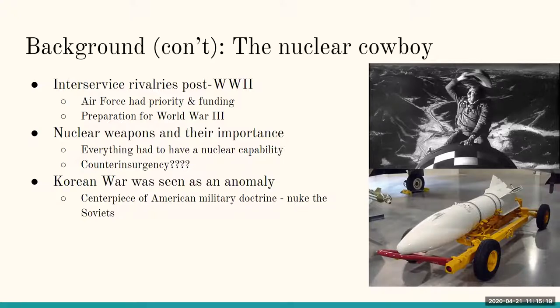Nuclear weapons were by far the most important thing. Every weapon made had to have some kind of nuclear capability. Just below the black-and-white picture you'll see the AIR-2 Genie — one of the most unusual weapons from the early 1950s. It was an unguided rocket meant for a fighter plane to shoot down a bomber, and it was nuclear-tipped — pretty much the closest thing to hip-tossing a nuclear weapon. It wasn't just limited to the Air Force: the Navy was making nuclear torpedoes, and the Army had nuclear backpacks. During all this talk of nuclear weapons, nobody had any idea what counterinsurgency was.